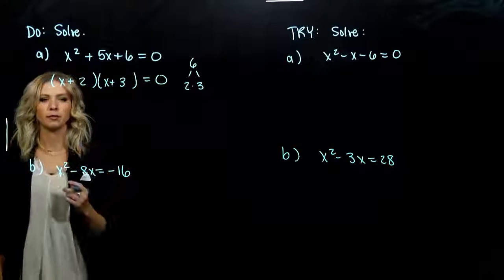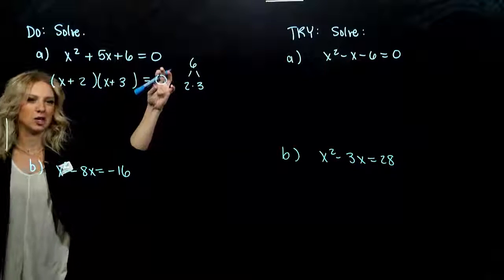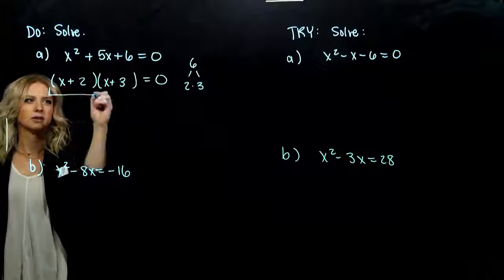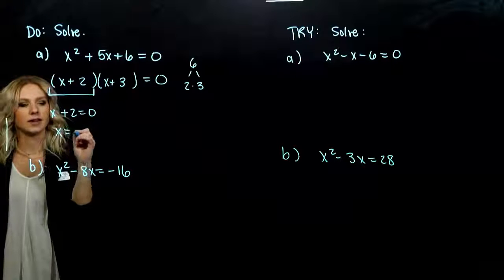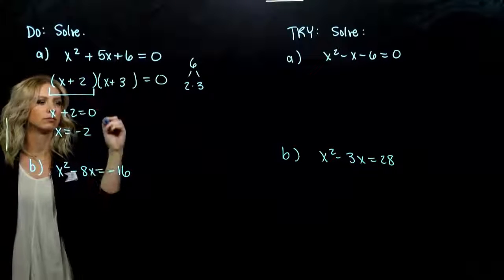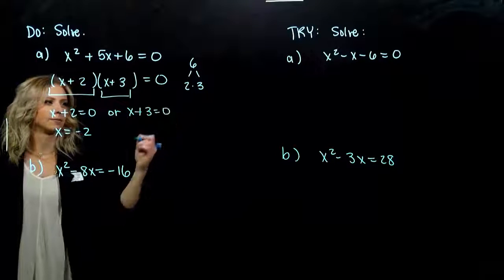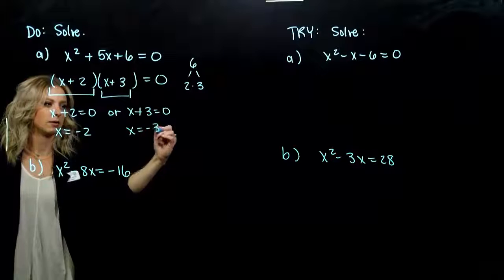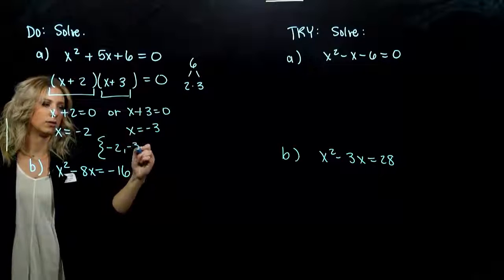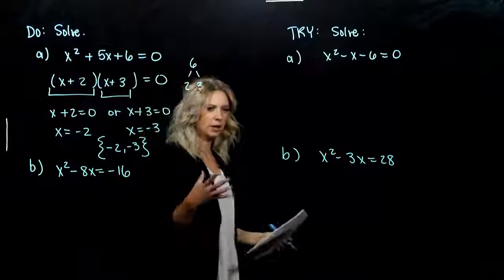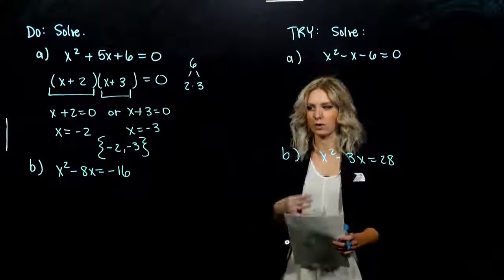So we need 2 and 3 — order doesn't matter, we could flip them around. Now we have a product: two things being multiplied equal to 0. Either the first piece equals 0, giving us x equals negative 2, or the second piece equals 0, giving us x equals negative 3. So the solution set is negative 2 or negative 3. If you aren't certain, plug it back into the beginning and check.